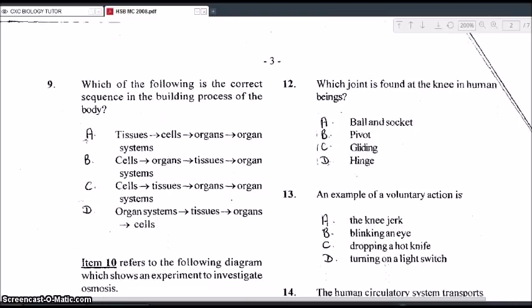Okay, question 9. Which of the following is the correct sequence in the building process of the body? So we're looking at cellular organization. So the correct answer would have to begin with cells. So there are only two options for that. Because remember cells are the basic unit of life. So we have cells coming together to form tissues. Tissues coming together to form the organs. And then organs coming together to form the organ systems. So that is C, the correct answer.